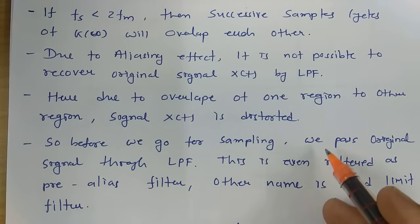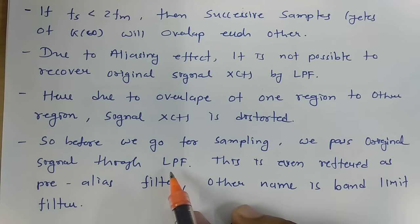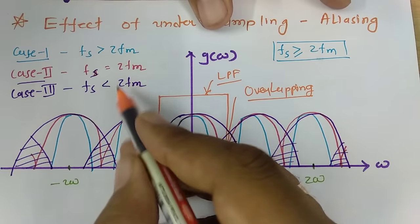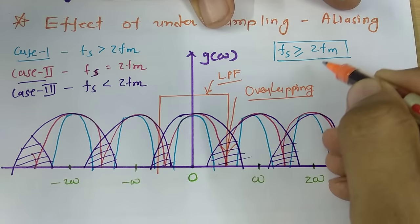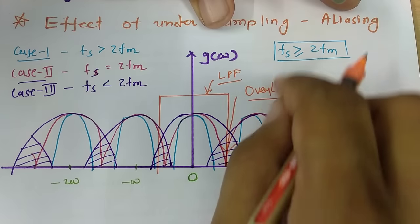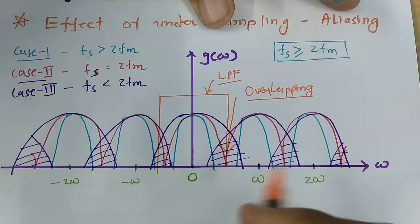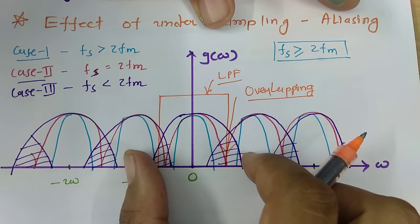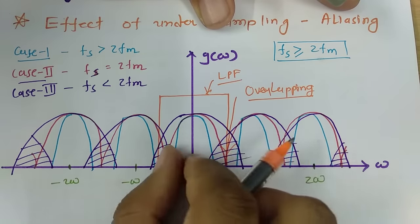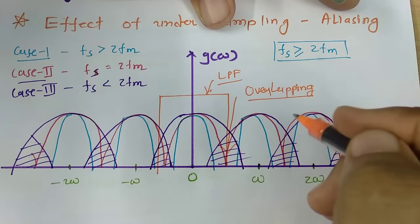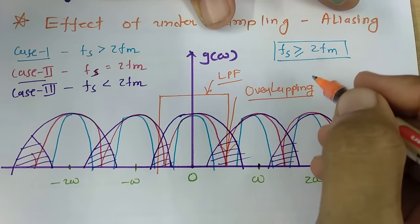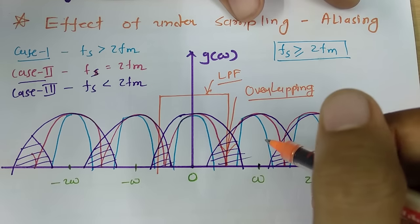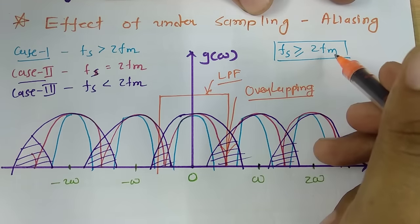Before we go for sampling, if we pass the original signal through a low pass filter — referred to as a pre-aliasing filter — we can keep fm smaller. If fm is small, we can satisfy the Nyquist condition. If fm is large, there is a possibility of overlapping because the region of different samples increases. By passing the original signal x(t) through a low pass filter initially before sampling, we restrict the frequency bandwidth.